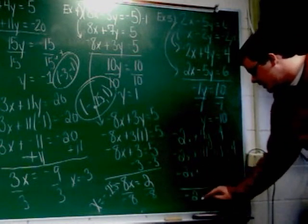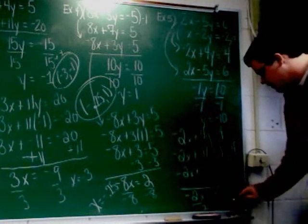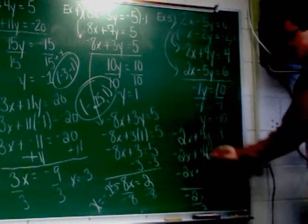I've got negative 2x equals 44. Divide by negative 2. x equals negative 22.